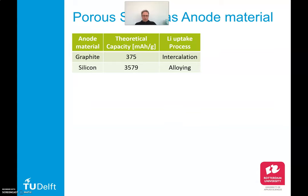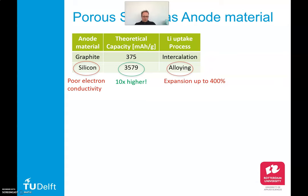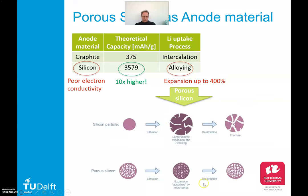Silicon is a very interesting material as an anode material. It has a theoretical capacity 10 times higher than the normally used graphite anode, so that makes it very interesting. Silicon is a poor electron conductive material, but the most important drawback is the expansion — it expands up to 400% when it is alloyed with lithium. One of the possible solutions is use of porous silicon, because the pores can absorb the expansion.